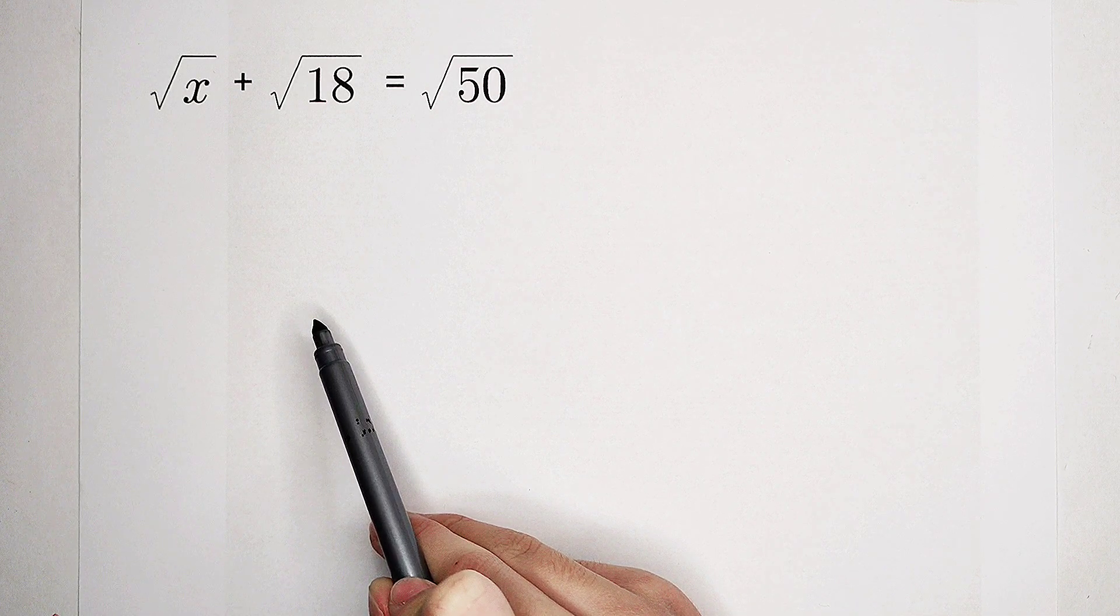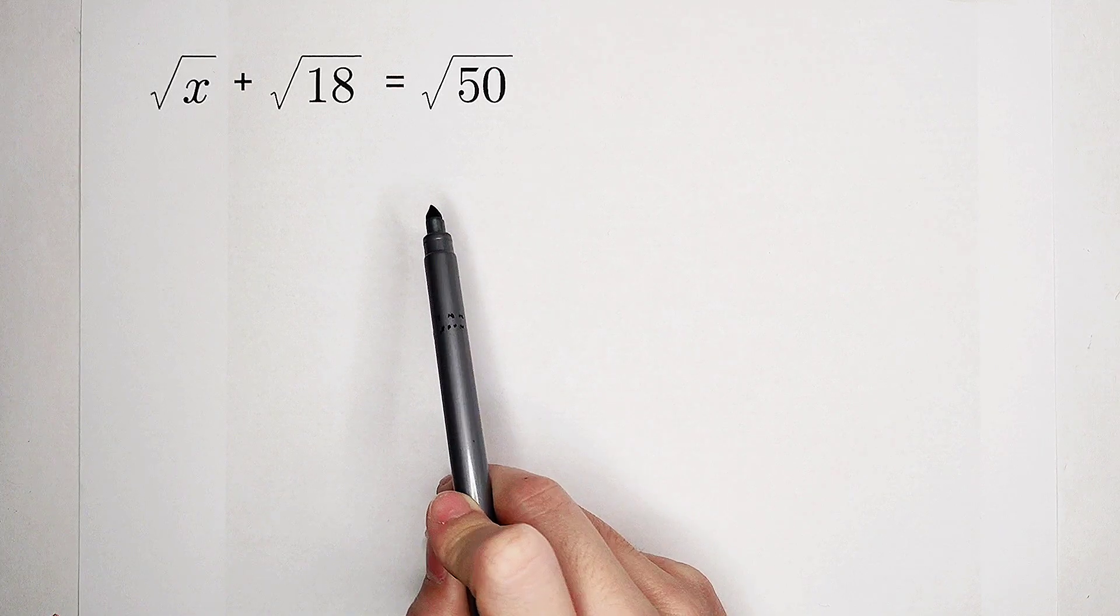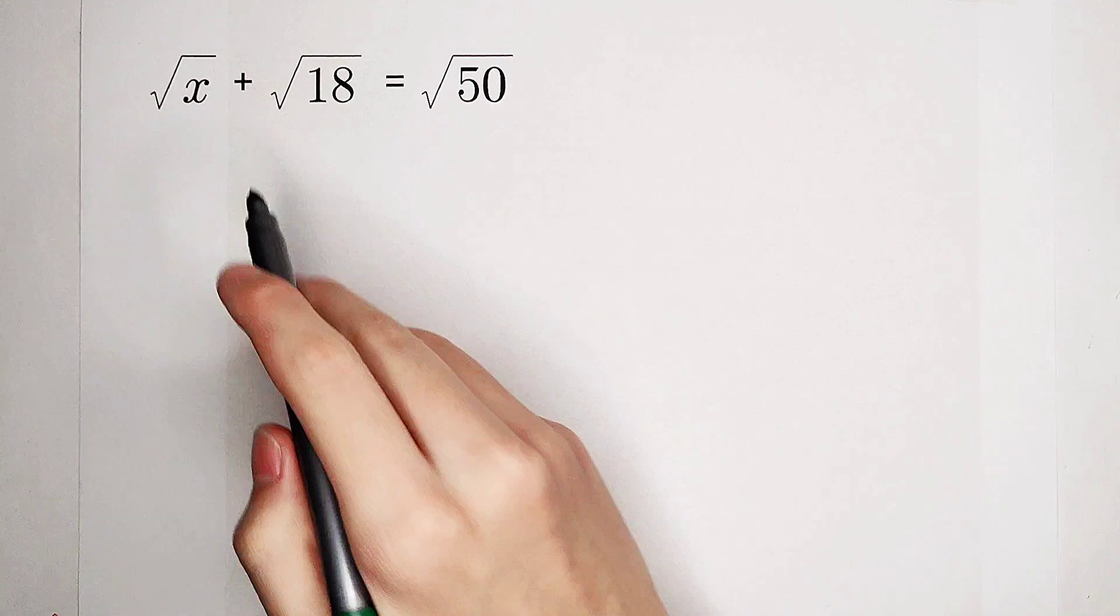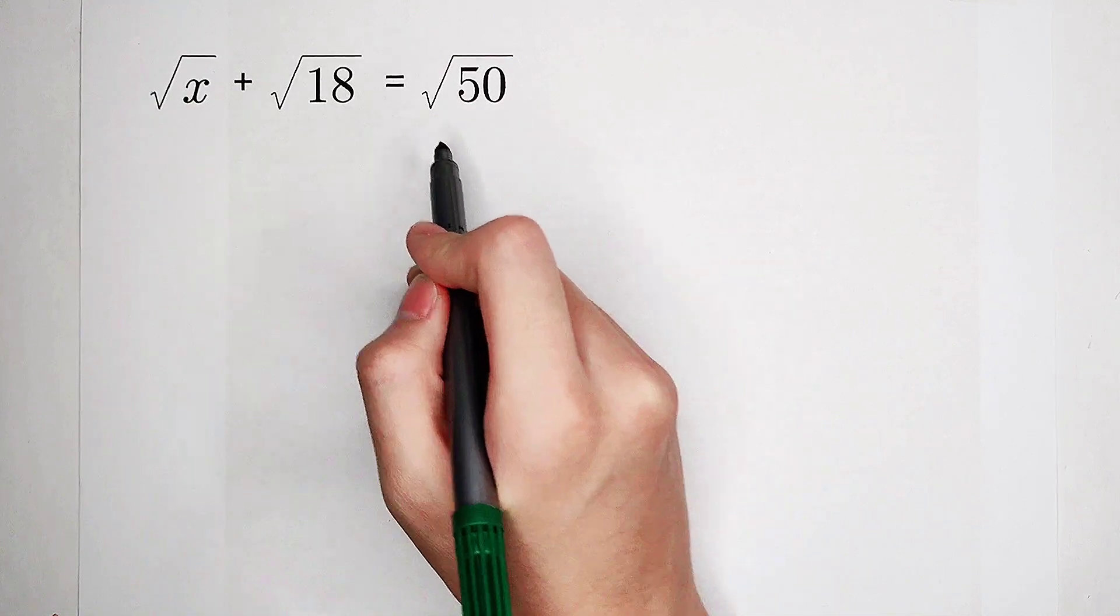For solving this equation, the square root of 18 and the square root of 50 are in the way. How should we solve this question? How should we deal with these two numbers? First, we should simplify the square root of 18 and the square root of 50.